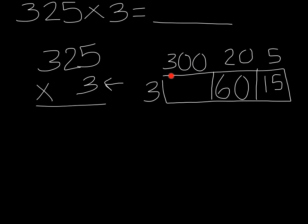Finally, we need to find the area of the last box, which is going to be length 300 times width 3. 3 times 3 equals 9. Tack on the two 0s. Now, as you know, and I'm sure you're thinking, we are not done yet. I cannot say that my answer is 900, 60, and 15.